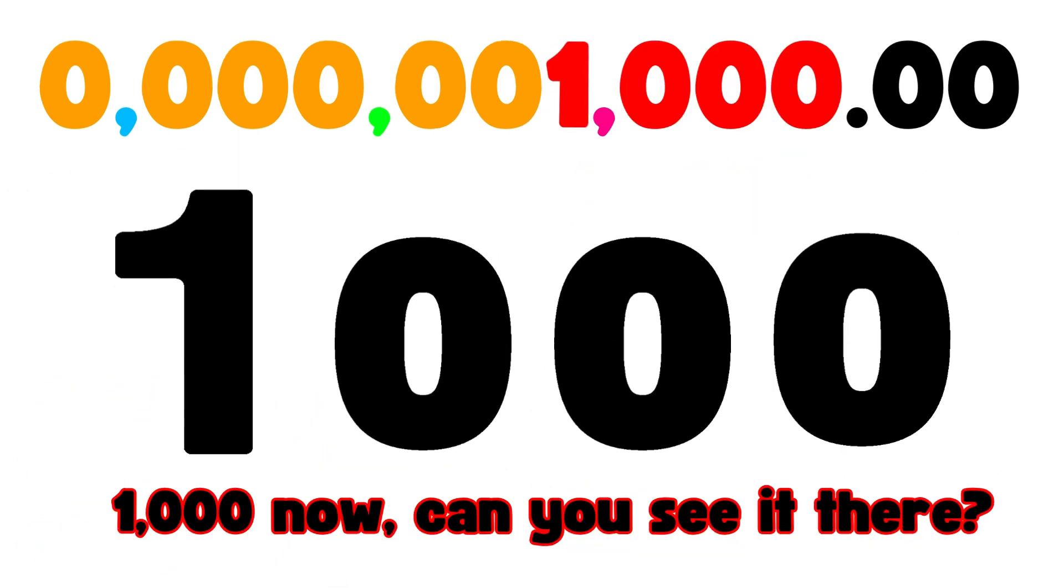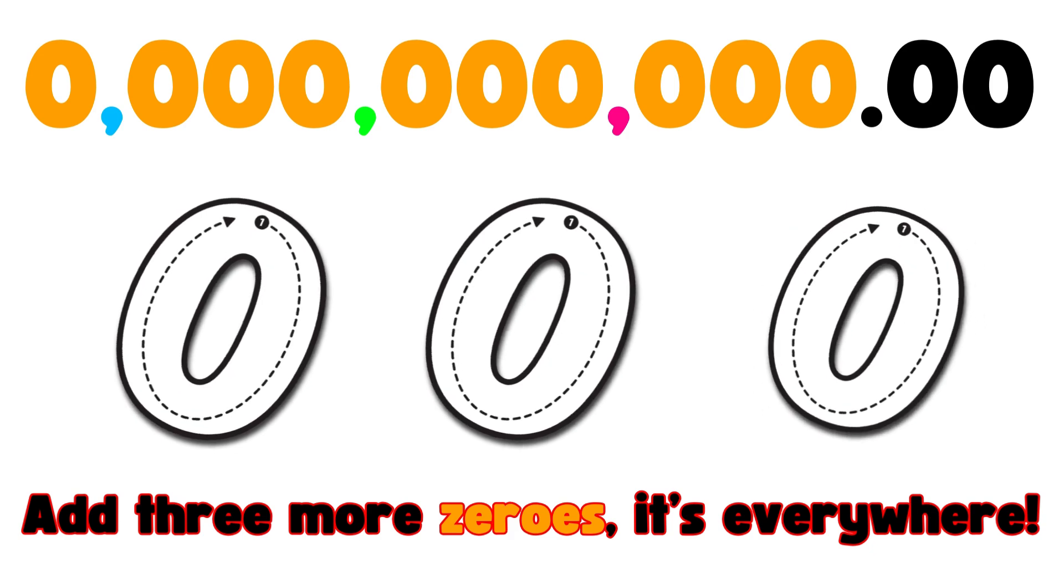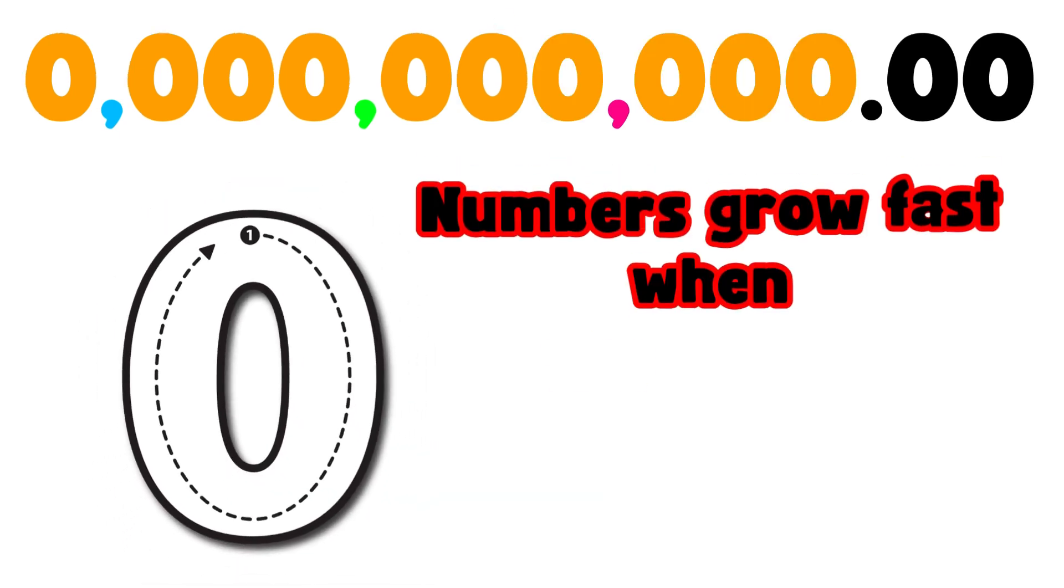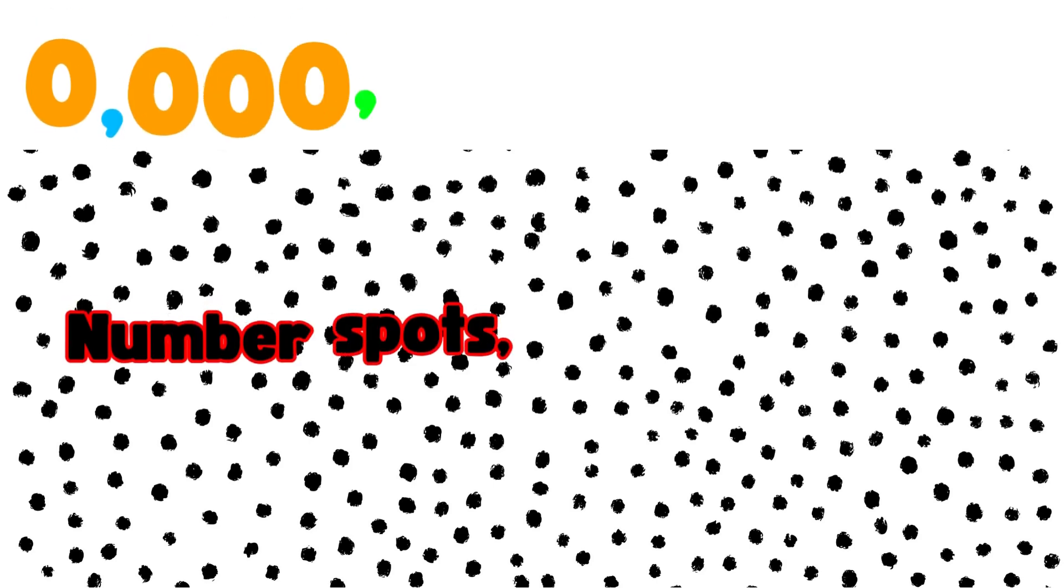One thousand now, can you see it there? Add three more zeros, it's everywhere. Ten thousand, a hundred thousand too. Numbers grow fast when the zeros come through.